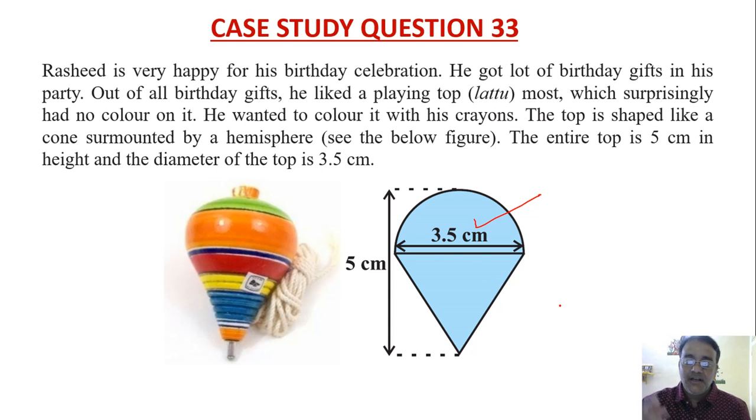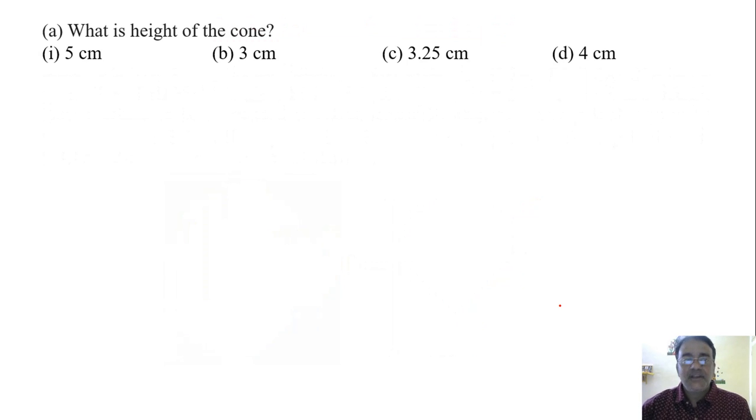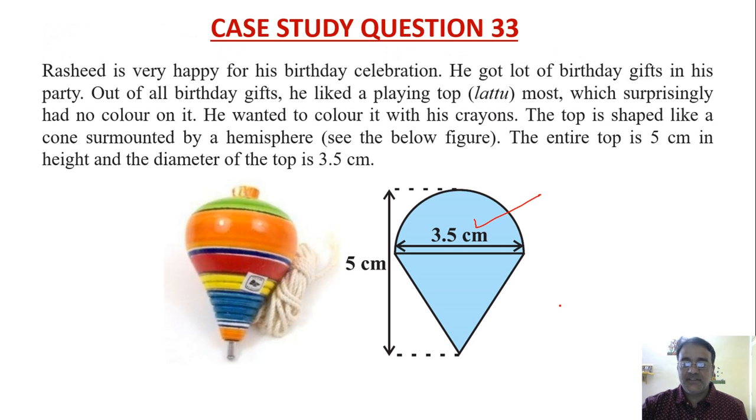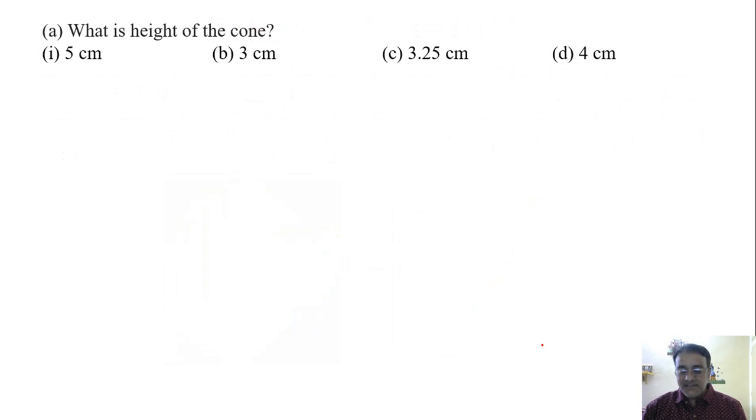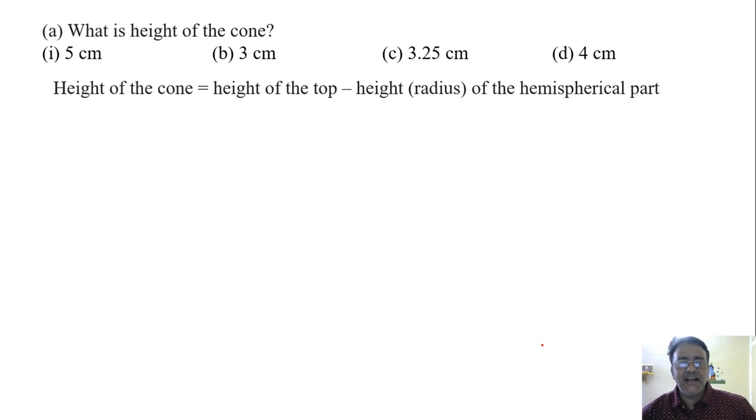Based on this, some questions have been framed. What is the height of the cone? The height of the cone equals the height of the top minus the radius of the hemispherical part, which is 5 minus 3.5 by 2. That's 5 minus 1.75, which equals 3.25 centimeters. So option C is the correct answer.